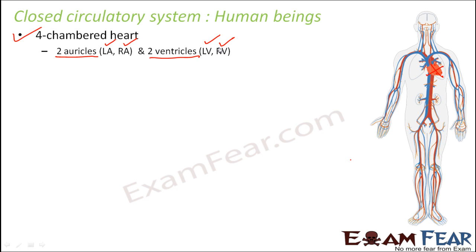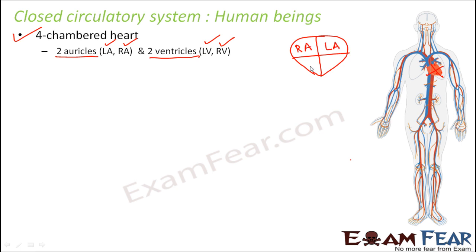Understanding the working of the heart is very important to understand the circulatory system. Roughly drawing the human heart, it is divided into four chambers: the right auricle, the left auricle, the right ventricle, and the left ventricle. You might ask: what is the need for dividing the heart into different chambers?